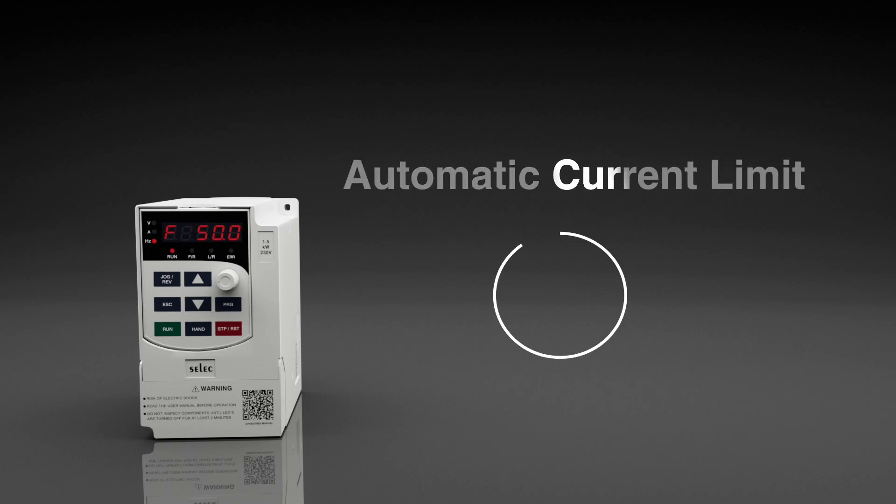Automatic Current Limit: In cases of high load and low ramp up times, the VFD automatically detects the sudden increase in current and self-modifies the ramping action to prevent nuisance over-current conditions.